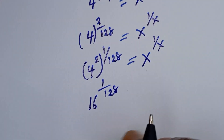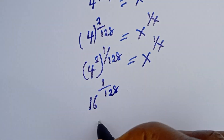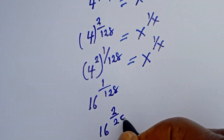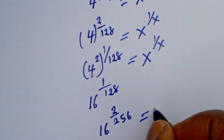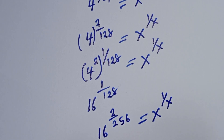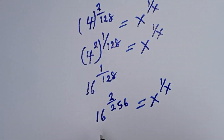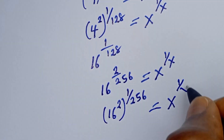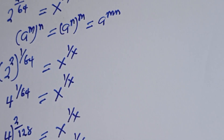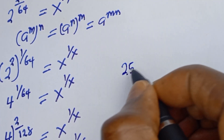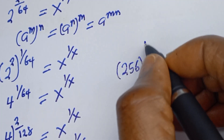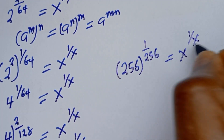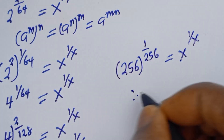Then 16 to the power of 1 over 128 can be written as 16 to the power of 2 over 256, which equals 16 squared to the power of 1 over 256. And 16 squared is 256, so we have 256 to the power of 1 over 256 is equal to s to the power of 1 over s.